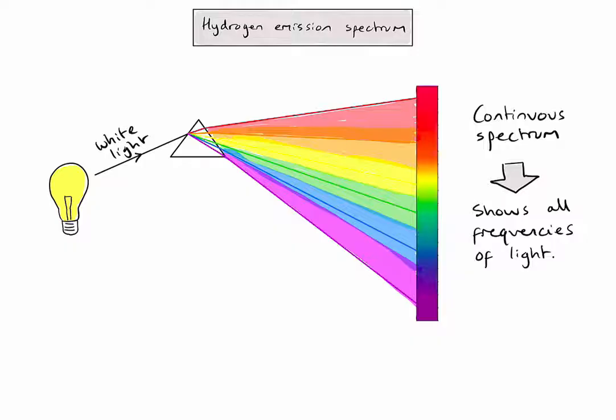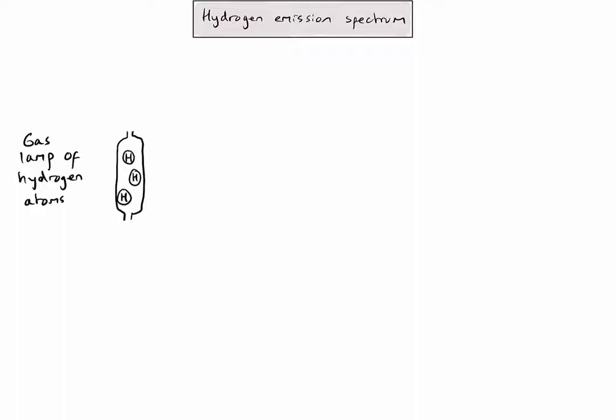Let's now try the same thing, but instead of a light bulb, we're going to use a hydrogen gas lamp. In my gas lamp, I've got lots of hydrogen atoms floating around. I'm going to pass lots of energy through my gas lamp using electricity or heat, and again we'll pass the light emitted from this gas lamp through a prism.